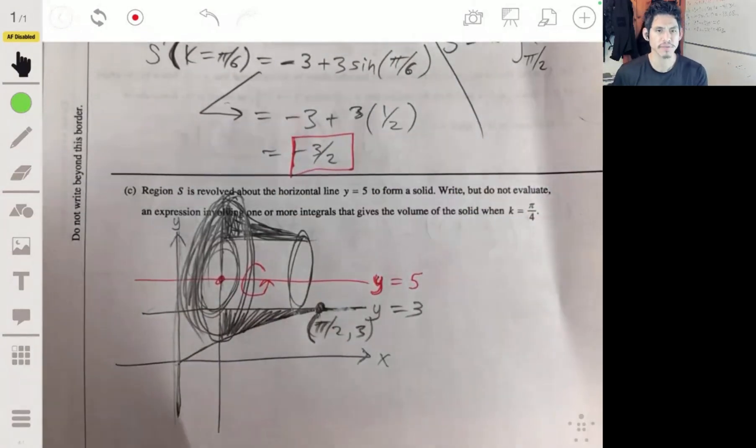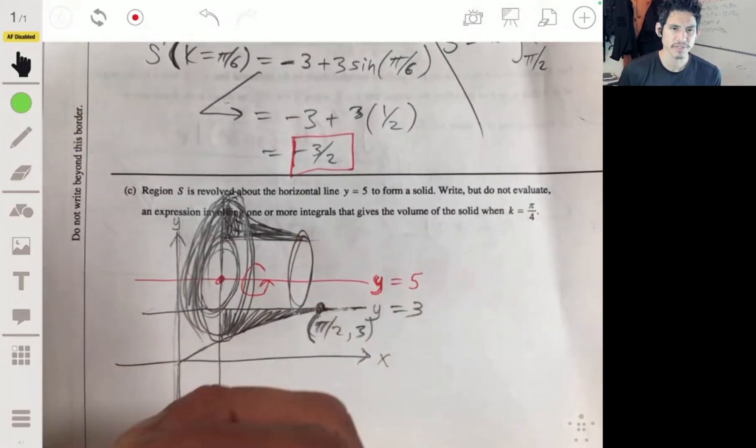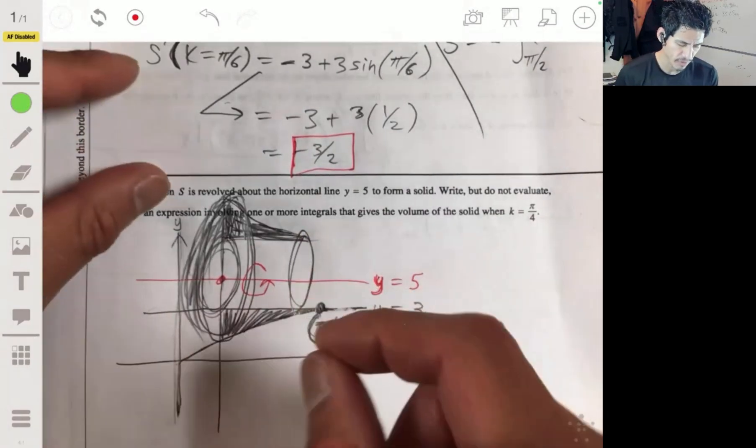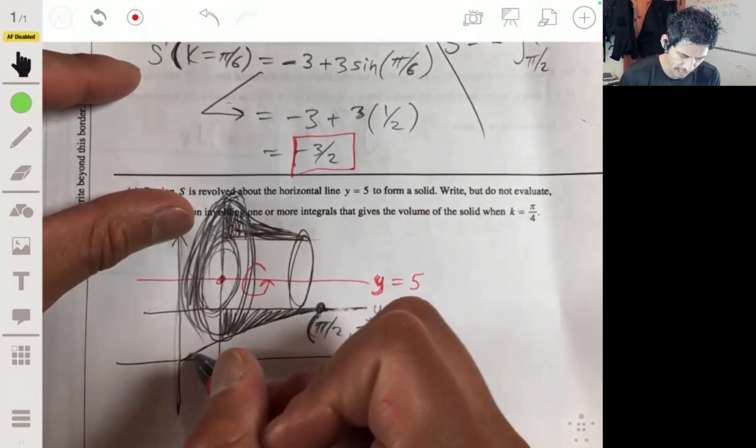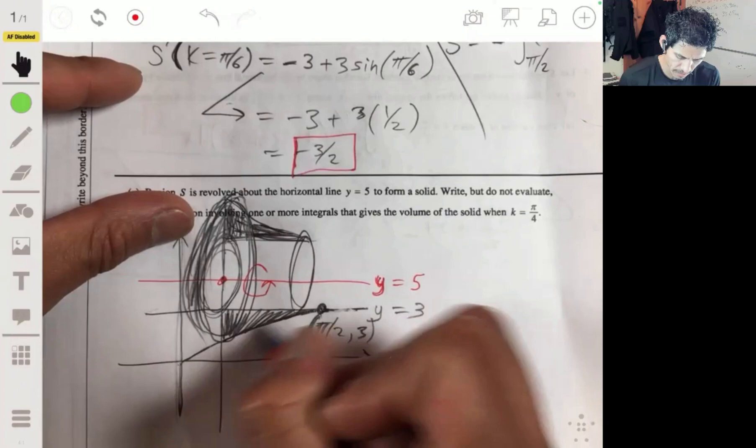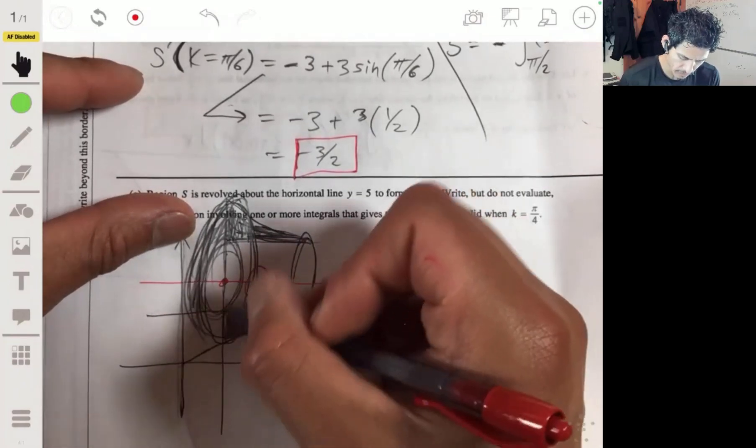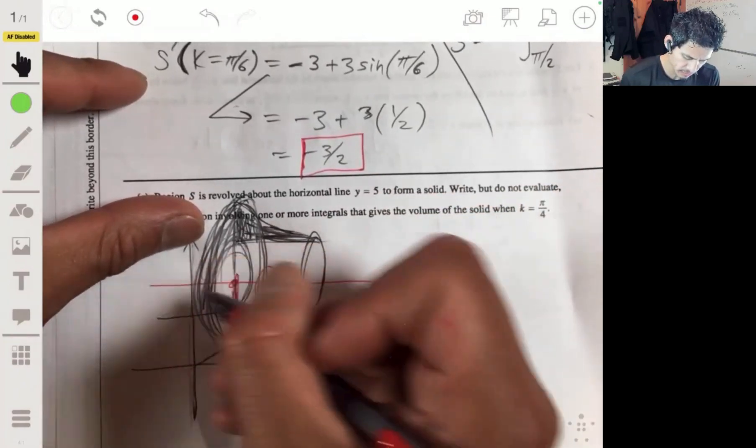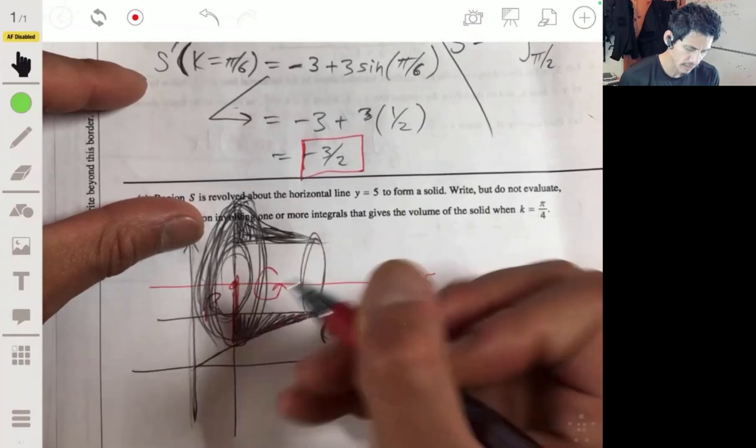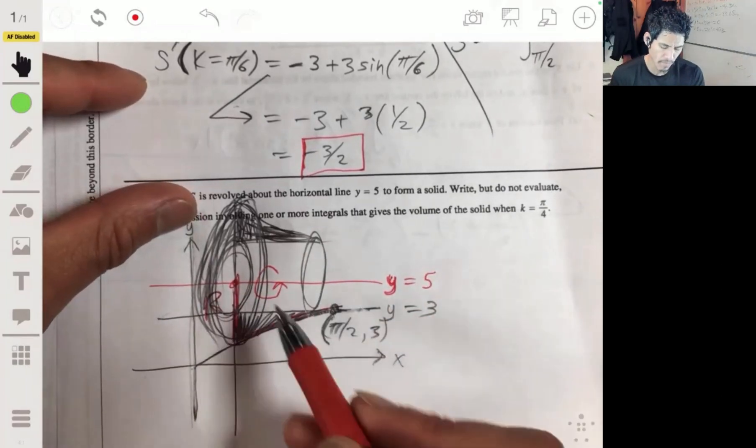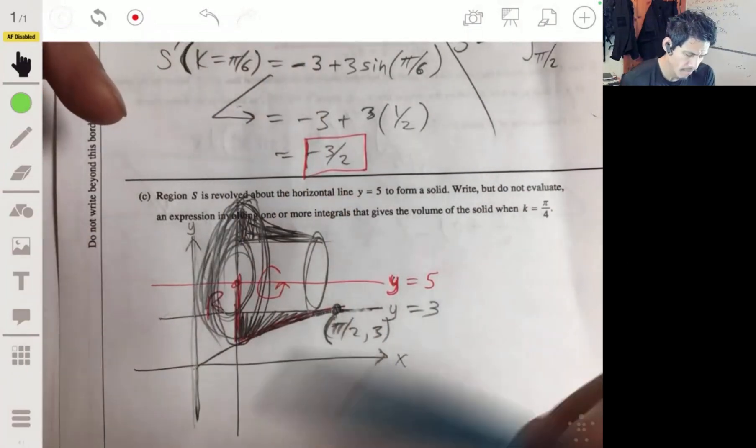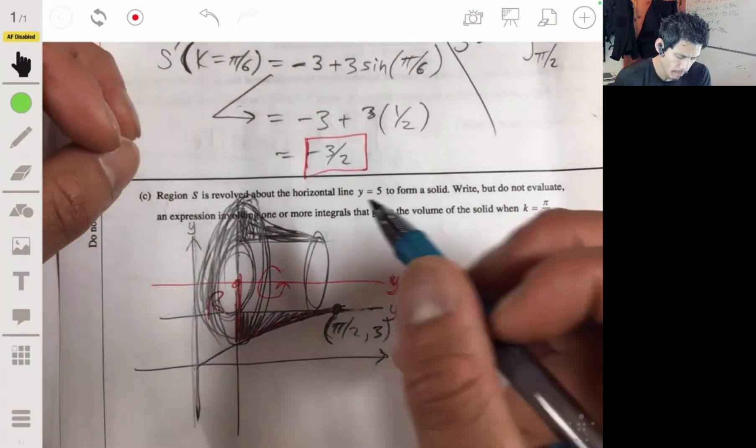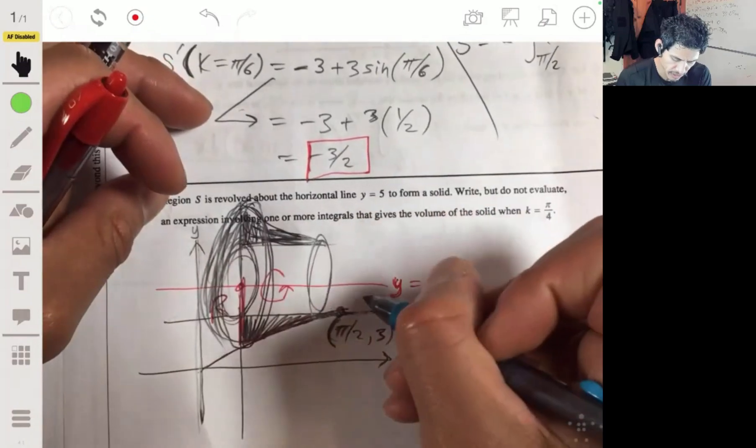But what you're going to essentially do is you're going to generate like a cone with a hole in the middle. You're essentially just remembering that you're going to take the large radius, which is the distance from here to this, to the outline, this line here. This line here, that's a large radius. That's your R minus the small radius. The small radius is from here to here.